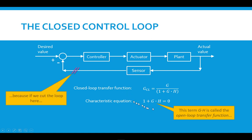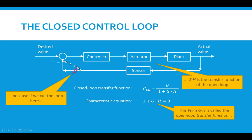The reason we call this the open loop transfer function is that if we cut the loop here, the open loop transfer function is no longer active — it's as if this link or this path is not here at all. And the open loop transfer function is simply the product of all of the transfer functions of these components.